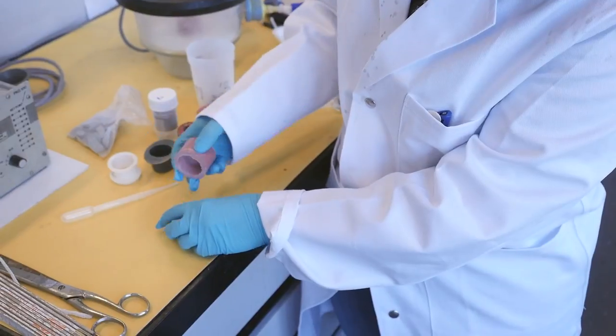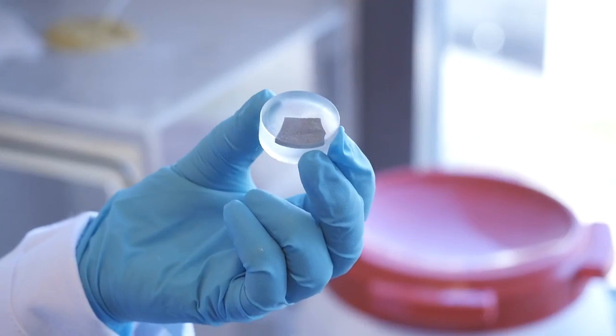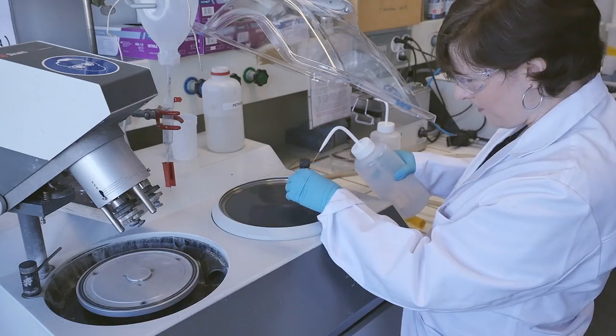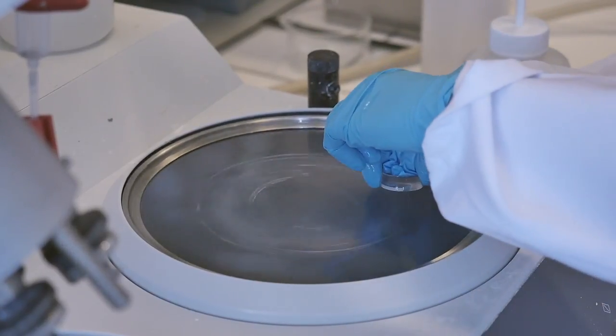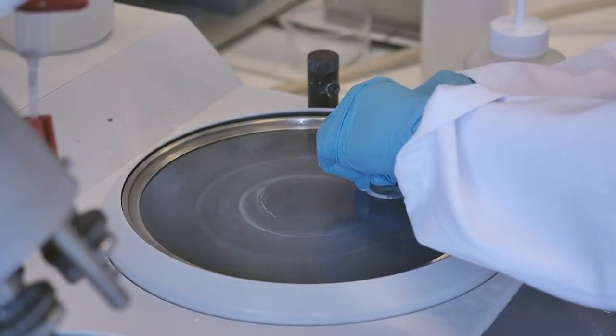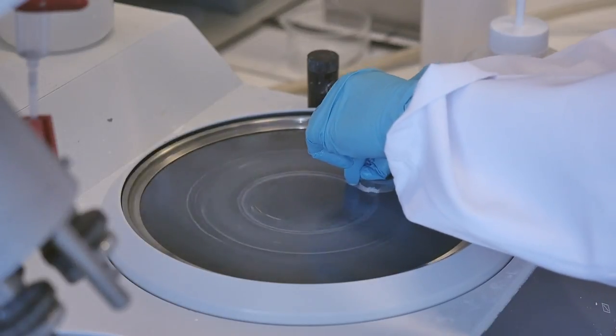The resin hardens within 24 hours and then it is possible to demould the samples. I will now show you how to polish the samples. First of all, we will slightly discover the sample with a 1200 sandpaper. A few seconds of polishing to remove a thin layer of resin at 150 rpm.